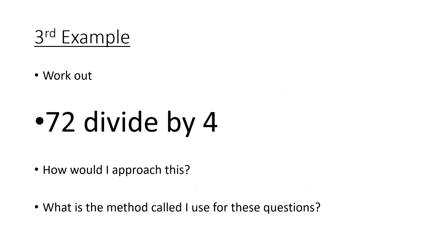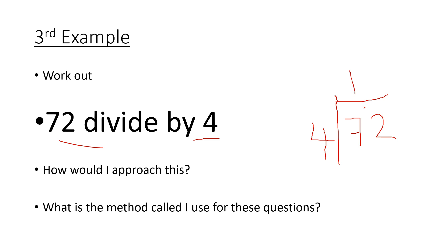Next: 72 divided by 4, using the bus stop method. 4s into 7 go once with 3 left over. 4s into 32 go 8 times. So the answer is 18. Alternatively, you could halve it and then halve it again — half of 72 is 36, and half of 36 is 18.